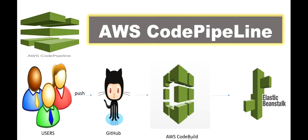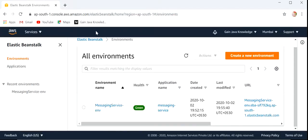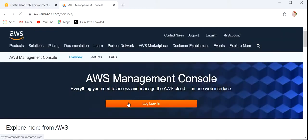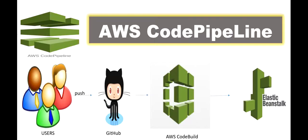Now we need to configure AWS CodeBuild. We need to tell AWS CodeBuild that this is my GitHub repo, take the checkout of the code from this repo, build it, create a jar for it, and then deploy to Elastic Beanstalk. Here we will select CodePipeline, so click on CodePipeline.